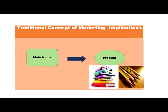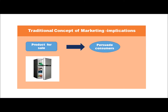Let's see what is the traditional concept of marketing. In the traditional concept of marketing, the main focus is on the product. Whatever we have produced, that has to be sold. For example, here we have manufactured a refrigerator. That means production has already happened and we will ensure that by persuading the consumers, we make them buy the product.